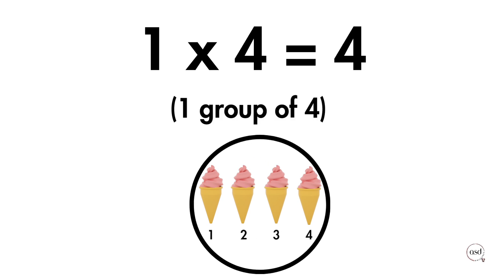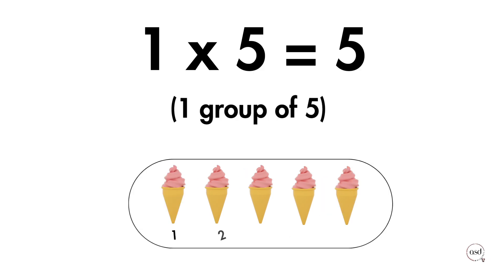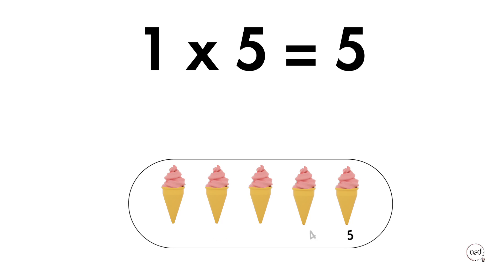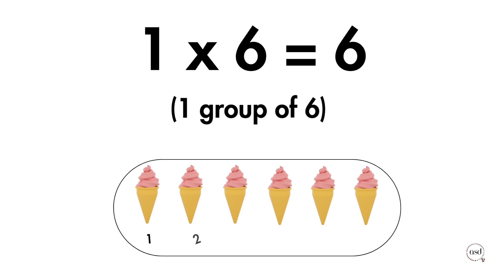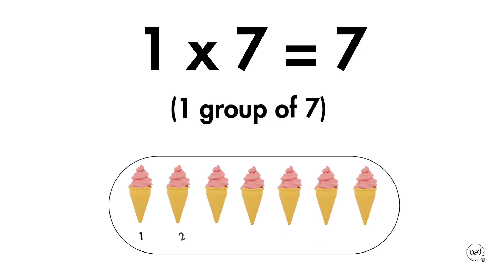1 group of 4 is 4. 1 group of 5 is 5. 1 group of 6 ice creams is 6.